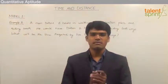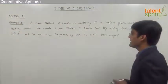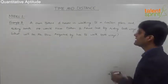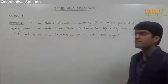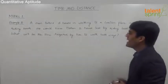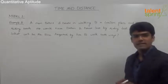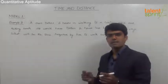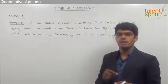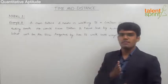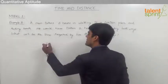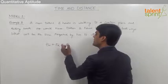The third example: a man takes 6 hours walking to a certain place and riding back. He would have taken 2 hours less by riding both ways. What is the time required by him to walk both ways? In the first case, he walks one way and rides back, taking 6 hours total. So time for walking plus time for riding equals 6 hours.